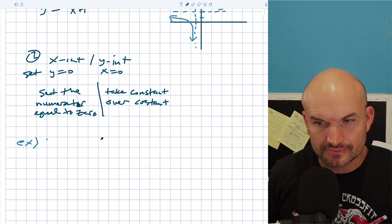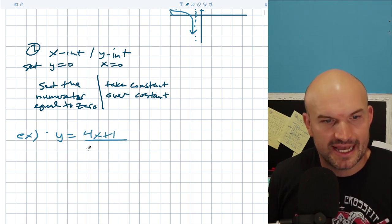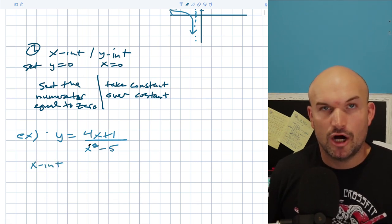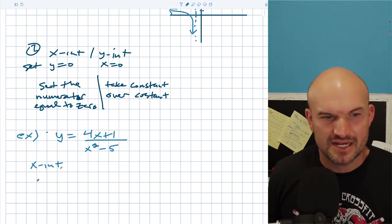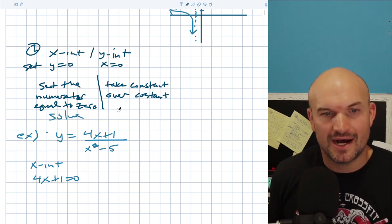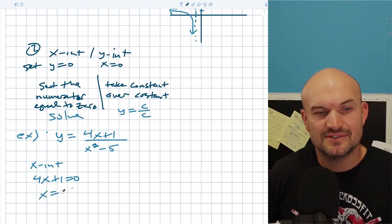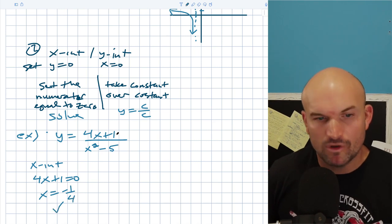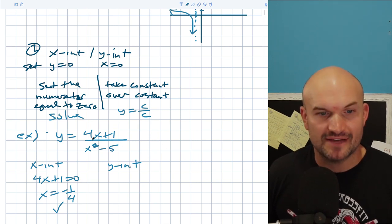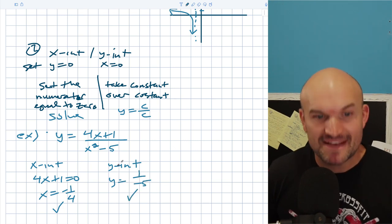Let's look at an example: y = (4x + 1) / (x² - 5). If I want to find the x-intercept, just set the numerator equal to zero: 4x + 1 = 0, subtract one, divide by four, x = -1/4. Done. What about the y-intercept? That's the constant over the constant: 1 over -5, so y = -1/5. Done. That's that quick, that fast.